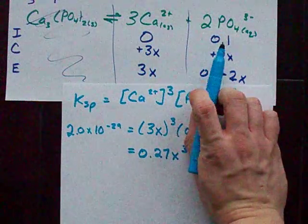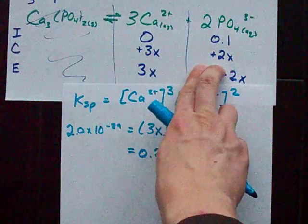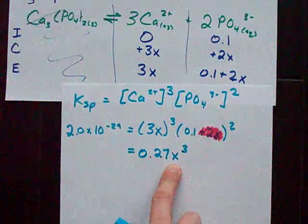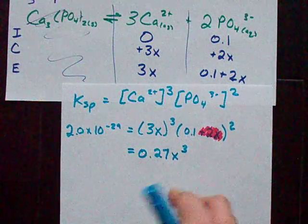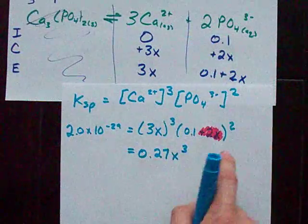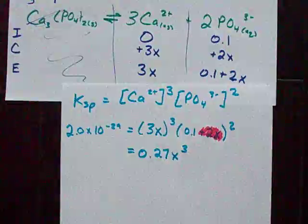If this had been 0 to start with, this would have been simply 2x. We could not have eliminated it from the expression this way, and we would have ended up with an x to the 5. But that's not the way this game is. Because we are starting with phosphate, we're allowed to make that assumption. And we'll end up with an x cubed instead.